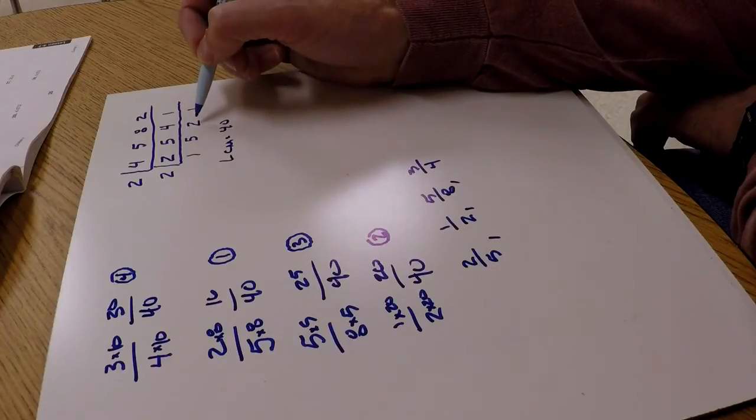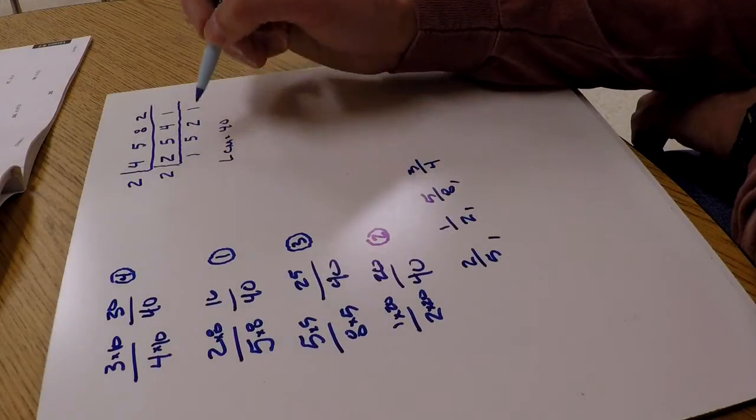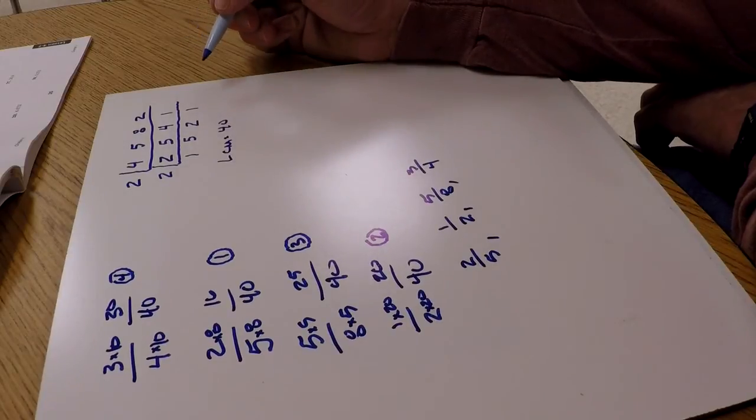But if there would have to be two 2s, then I would just divide that by 2 and get those down to 1s. Hopefully I'll post up another video and find an example of that.